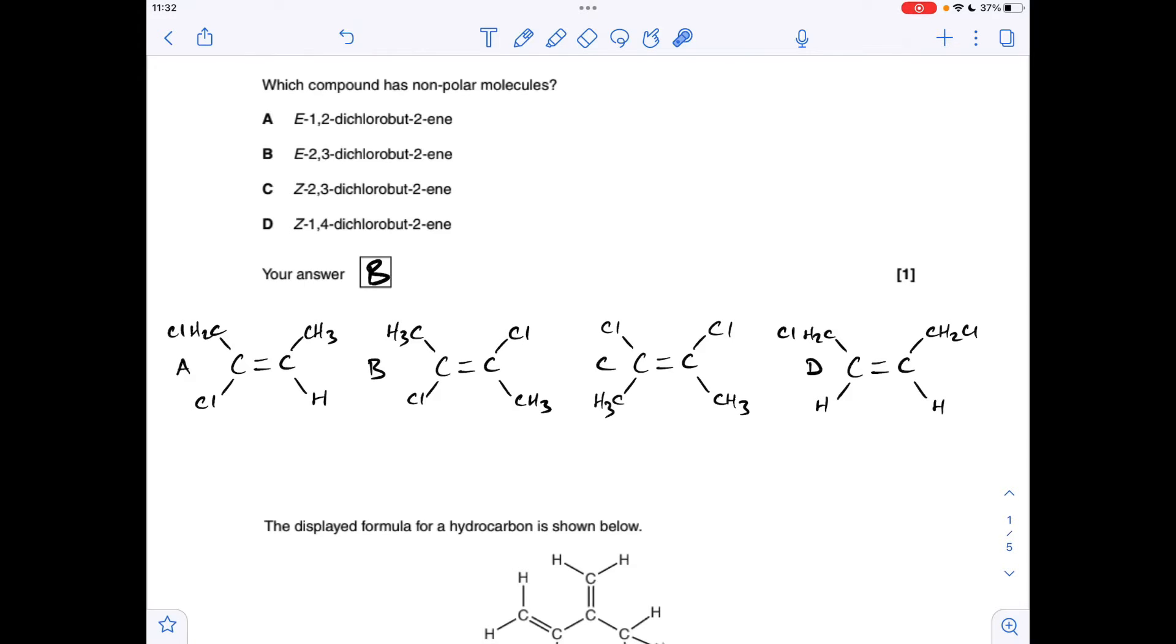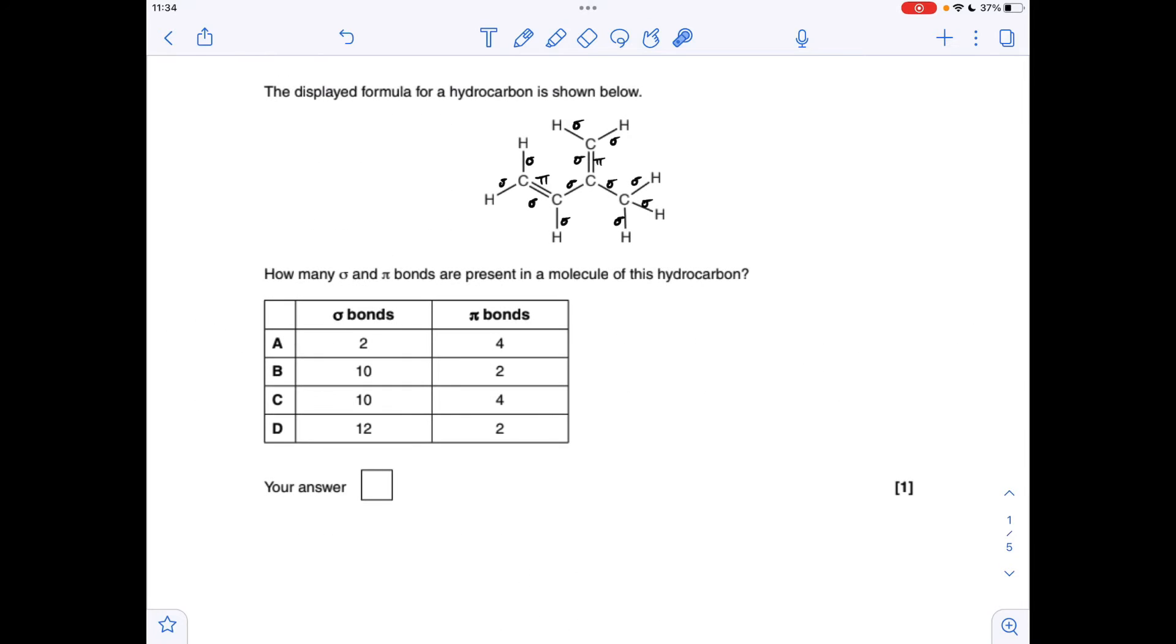D is Z-1,4-dichlorobutene. We need the chlorines on carbons 1 and 4, and the priority groups need to be on the same side of the double bond. The priority group on the left-hand carbon is this CH2Cl group, likewise this carbon. They're both on the same side, that makes it Z. Obviously this one will be a polar molecule as well. So the answer was B.